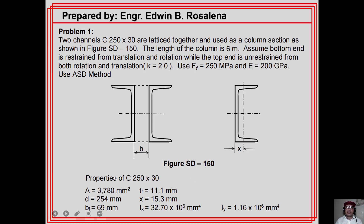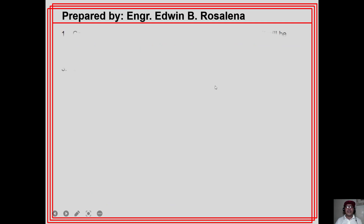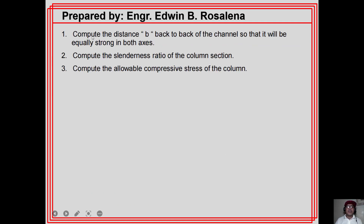We have here the properties of one C 250 by 30. Question number one: compute the distance B back to back of the channels so that it will be equally strong in both axes. Question number two: compute the slenderness ratio of the column section. And question number three: compute the allowable compressive stress of the column.